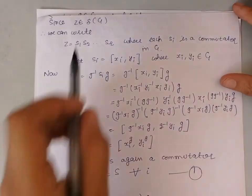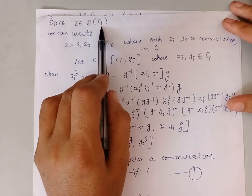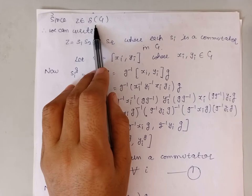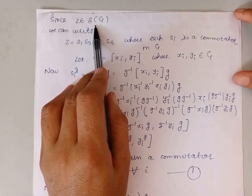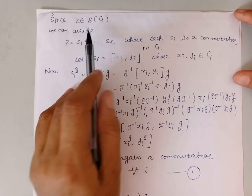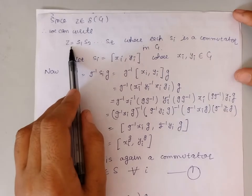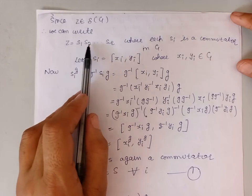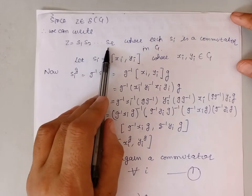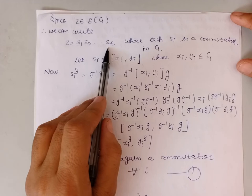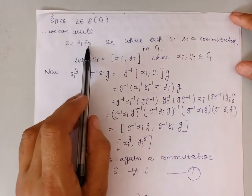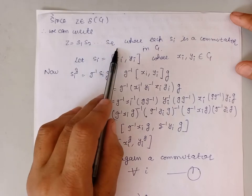Because Z is an element of the commutator subgroup, by definition the elements of commutator subgroups are of the form of a finite product of commutators. It means Z will be of the form of a finite product of commutators. We have taken commutators S1, S2, S3, and so on up to Sr — these are the commutators in the group G — and Z = S1·S2·S3·...·Sr.